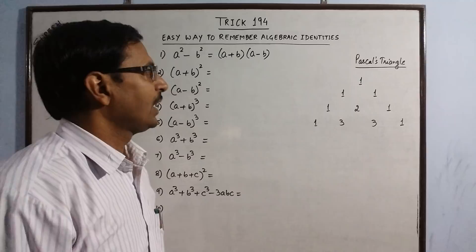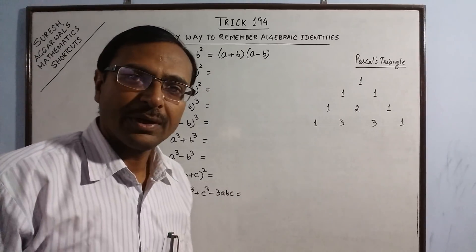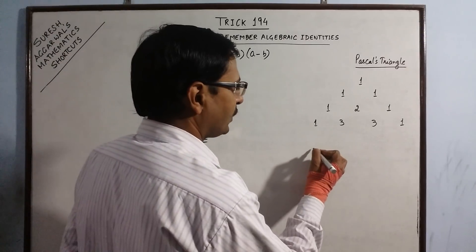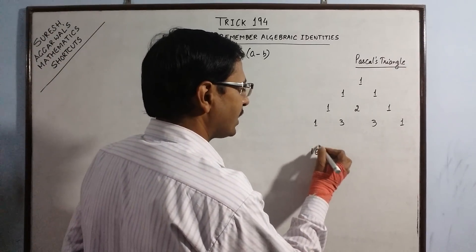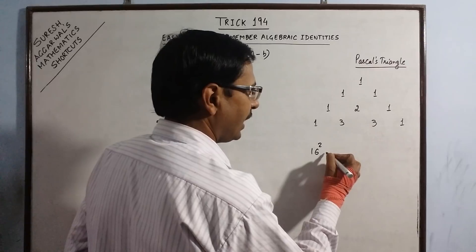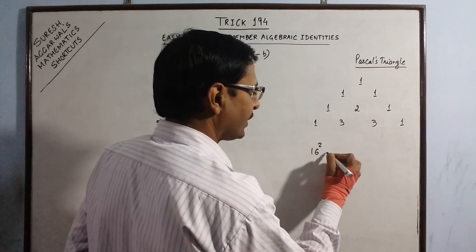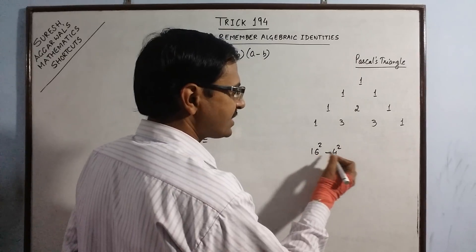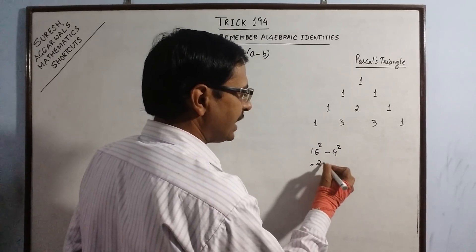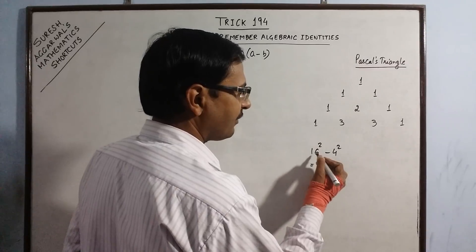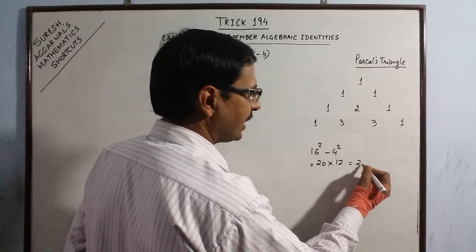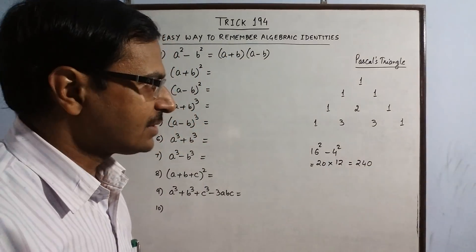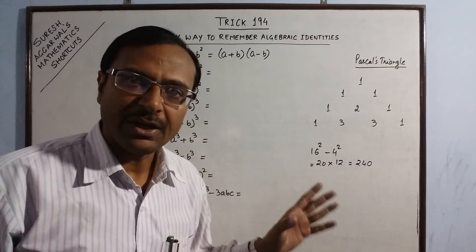This identity can be used to solve a variety of problems. For example, if you have 16 square minus 4 square, you add them: 16 plus 4 is 20, and take the difference: 16 minus 4 is 12, then multiply to get the answer as 240. Likewise this identity can be used to solve a variety of problems.